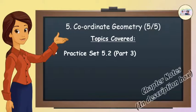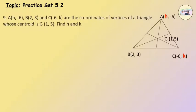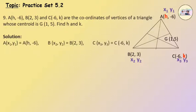Coordinate Geometry, Practice Set 5.2, Question 9. A, B and C are the coordinates of the vertices of a triangle whose centroid is G. Find h and k. Here, the x-coordinate of A and y-coordinate of C are unknown. Given A, B and C are the coordinates of the vertices, the centroid G is equal to G.